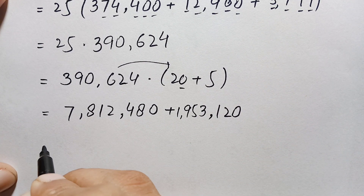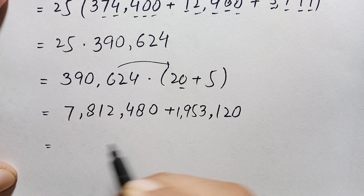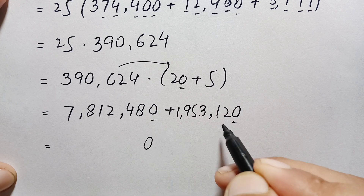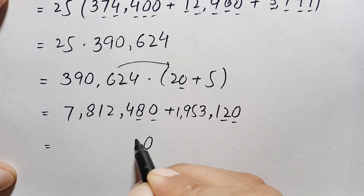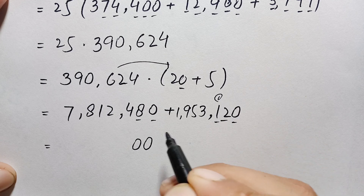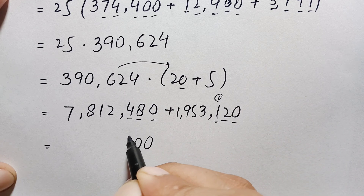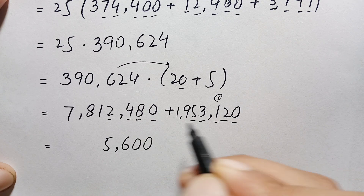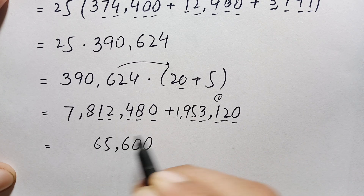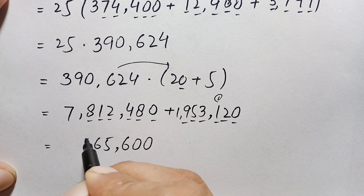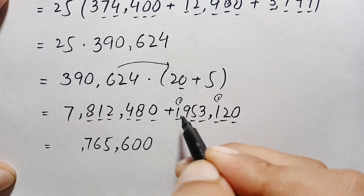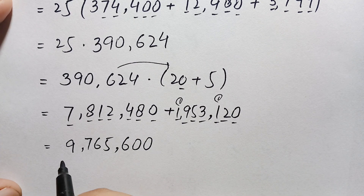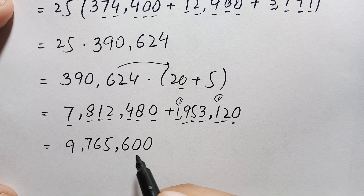Finally, we add 7,812,480 and 1,953,120. Starting from the ones position: 0 plus 0 is 0; 8 plus 2 is 10 — write 0, carry 1; 4 plus 1 plus 1 is 6; 2 plus 3 is 5; 1 plus 9 is 10 — write 0... 9 plus 8 is 17 — write 7, carry 1; 7 plus 1 plus 1 is 9; 1 plus 2 is... giving 9,765,600. So the sum of these two numbers is 9,765,600.